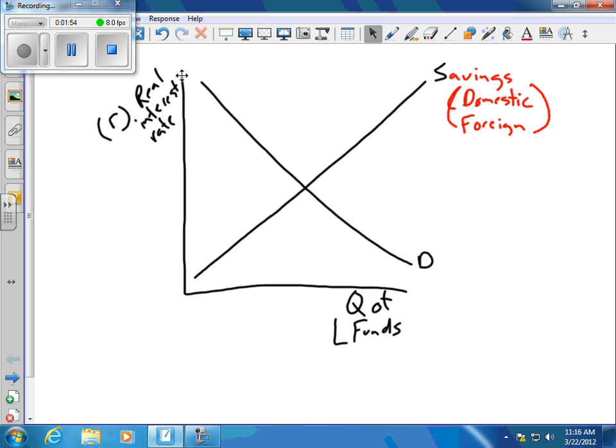So you have supply going up and to the right. When I say domestic savings, if you put a hundred dollars into the bank, you know from the reserve ratio the bank has to keep a certain amount in the bank and can loan out the rest.